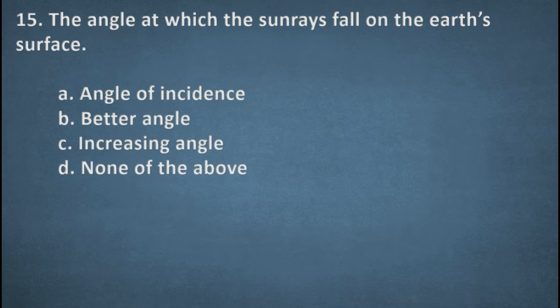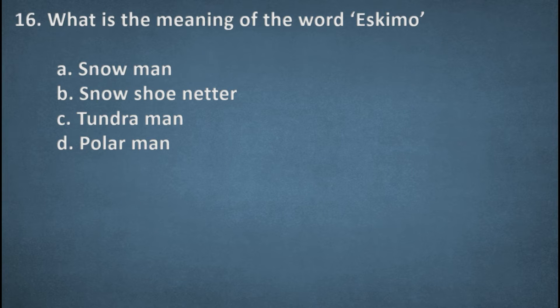Next one. The angle at which the sun rays falls on the earth's surface. Options: Angle of incidence, Better angle, Increasing angle, None of the above. The right option, Angle of incidence. Next one. What is the meaning of word eczema? Options: Snowman, Snowshoe knitter, Tundra man, Polar man. The right option, B, Snowshoe knitter.